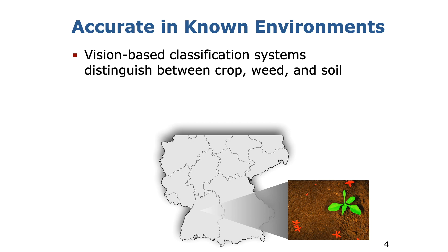They reliably distinguish between crops, weeds and soil, mostly using fully convolutional neural networks for semantic segmentation. These classification systems typically achieve a performance around 90% or more when the trained classifiers are deployed in similar field conditions. We call those similar environments the source domain.